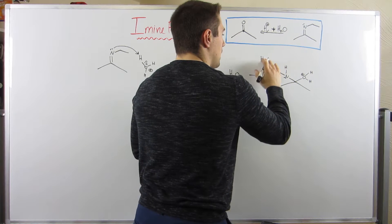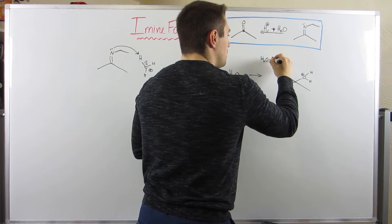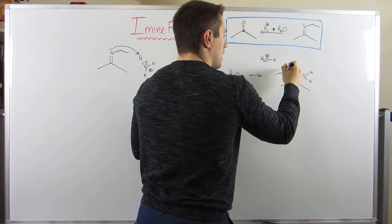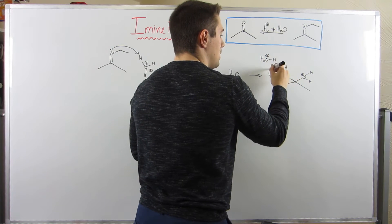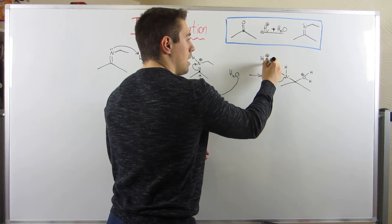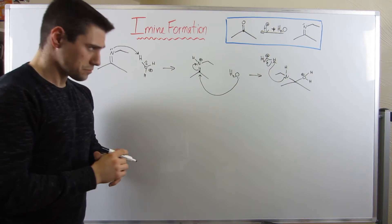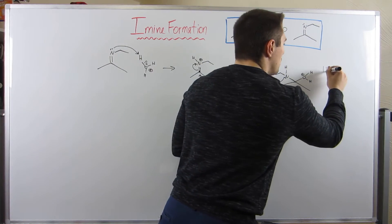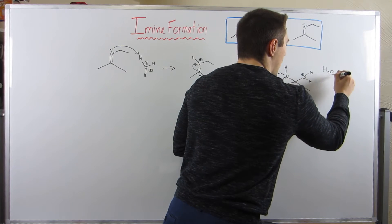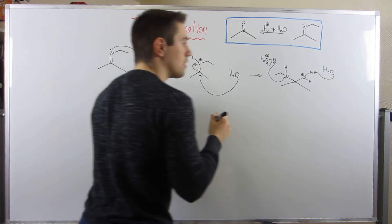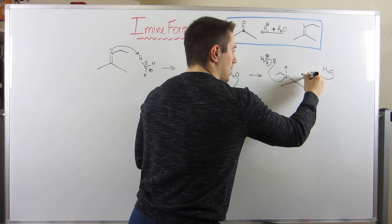So let's go ahead and do that. Again, I'll draw my very ratchet hydronium, nitrogen will come in, take that proton, electrons swing back on the oxygen. I'll have a different water come in and grab the proton right there and have these electrons swing back on that oxygen.